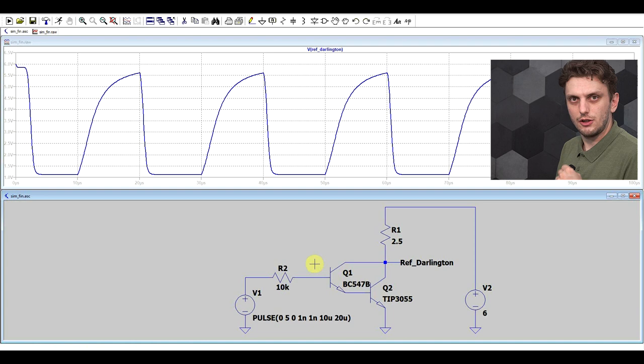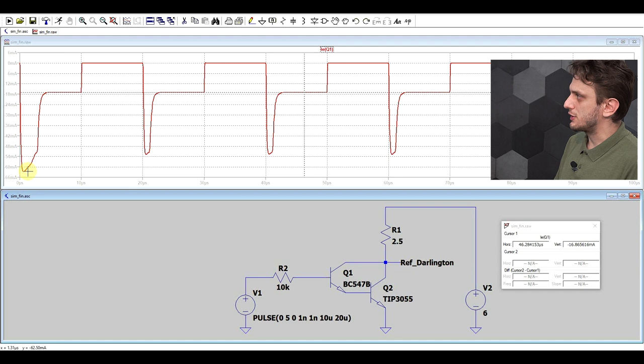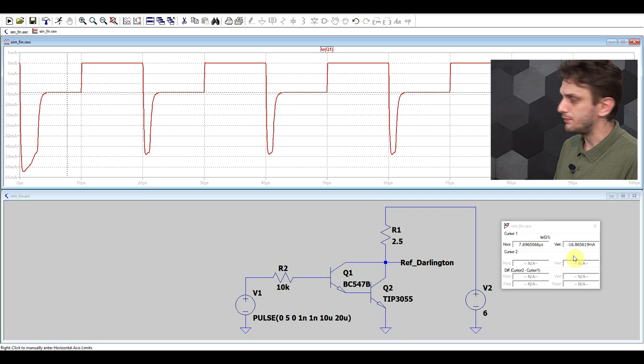Now if we run this we get our input signal and if we look into the collector of our Darlington transistor, well we see that it's turning on pretty okay but it's not really turning off. So with this 50 kilohertz signal things are still not working that well, but we'll fix that in a moment. For now let's just see the gain properties of this arrangement. So if we look into the base of the first transistor we see that we're using a current of around 300 microamps.